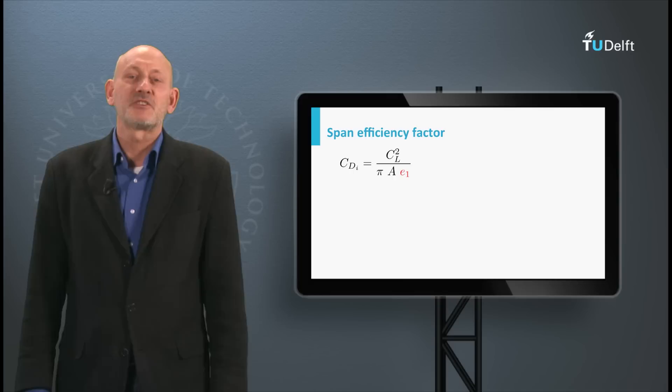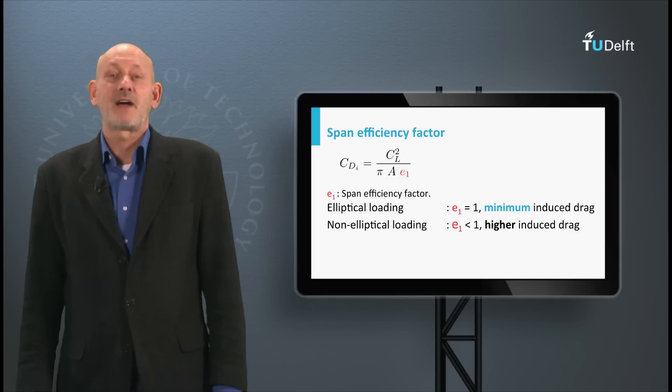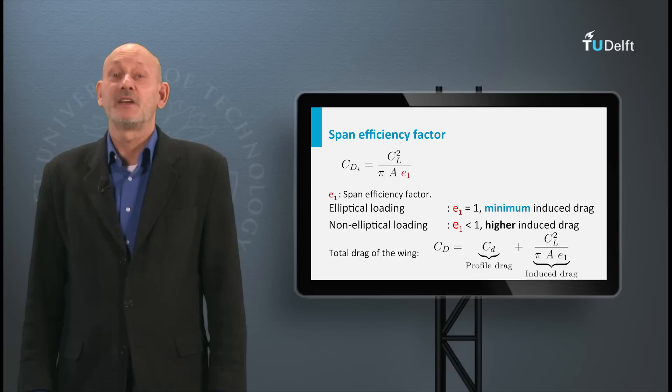For practical situations, the induced drag coefficient is given by CL squared divided by pi A E1, and E1 is called the span efficiency factor. When E1 is 1, we have the elliptical load distribution which gives the minimum induced drag. In all other cases E1 is smaller than 1 and consequently the induced drag is higher.